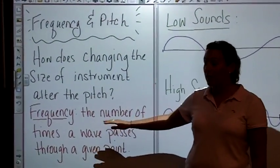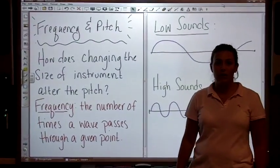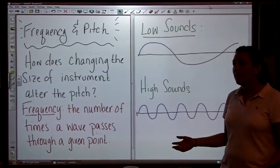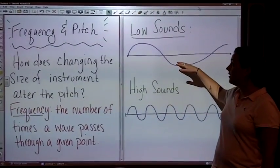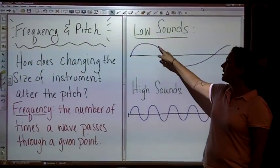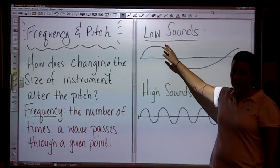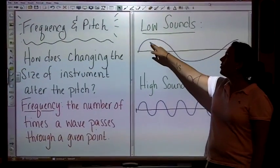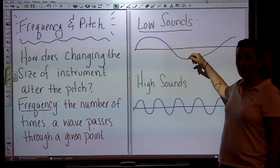We remember from our class before that frequency is the number of times that a wave passes through a given point. The given point for our purposes now is a time period. So if we look up here, remember that a whole frequency wavelength is the top and the bottom. So an example of a low sound or a low pitch would have a really low frequency because they have a direct relationship.